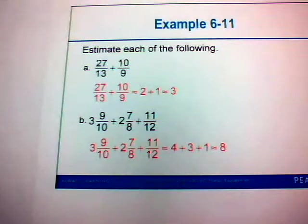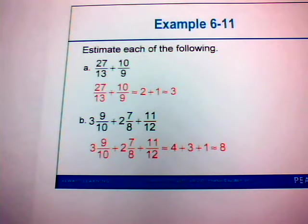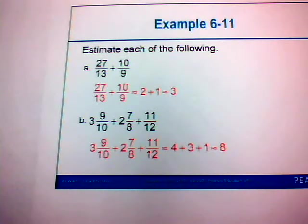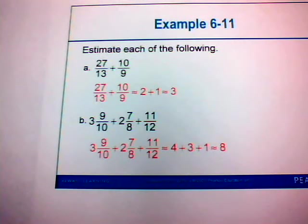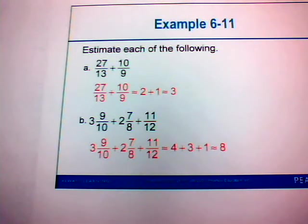To estimate twenty-seven-thirteenths plus ten over nine: twenty-seven over thirteen is a little more than two, so estimate as two; ten-ninths is a little more than one, so estimate as one. Two plus one gives an estimate of three. For three and nine-tenths plus two and seven-eighths plus eleven-twelfths: three and nine-tenths is close to four, two and seven-eighths is close to three, and eleven-twelfths is almost one. So four plus three plus one gives an estimate of eight.